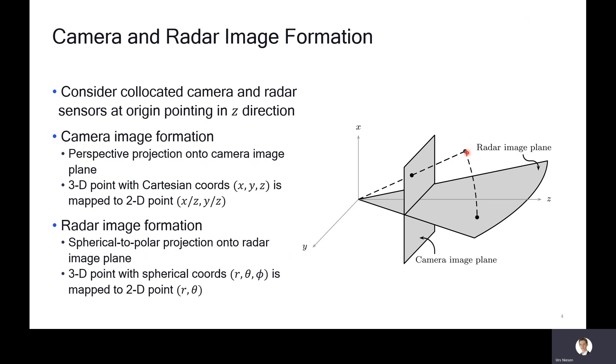The radar image formation is a bit less well known. Consider again the same 3D point. The radar image is the projection of this 3D point onto the radar image plane, which is this plane here. More precisely, this is the spherical to polar projection onto this image plane. Specifically, if you have a 3D point with spherical coordinates r, theta, and phi, it is mapped to the 2D point with polar coordinates r and theta.